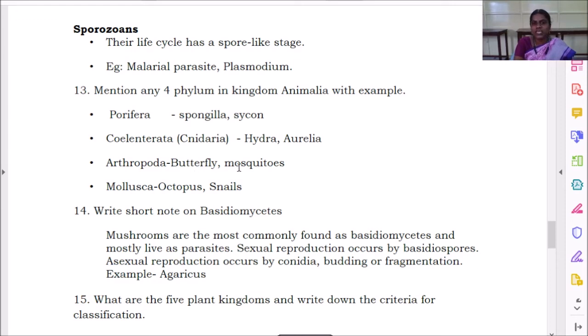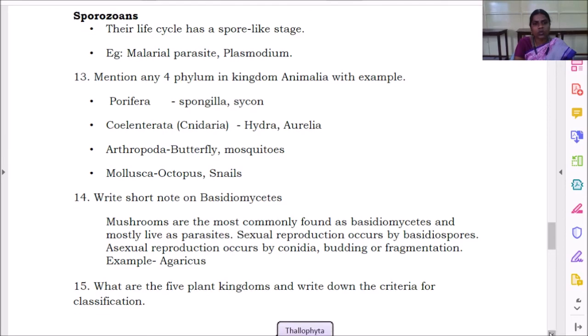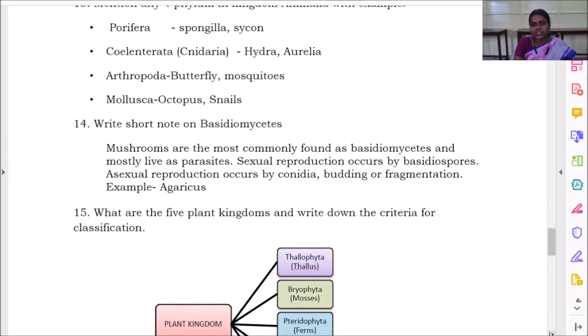Coelenterata, example is hydra, aurelia. For arthropoda, the example is butterfly, mosquitoes. Mollusca, for example is octopus and snails. These are the four phylums I had given. If you wish to give some other phylum in kingdom animalia, you may.